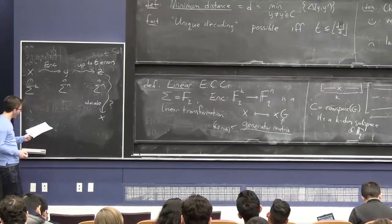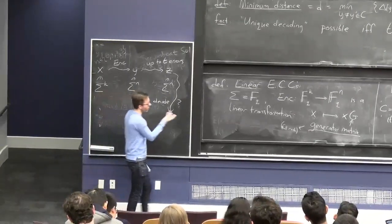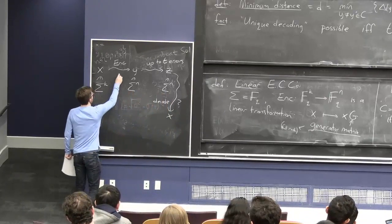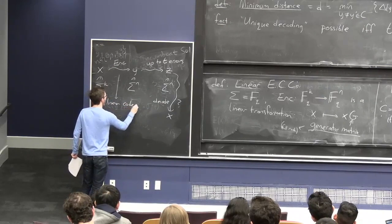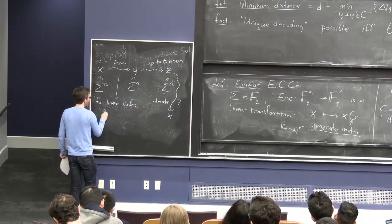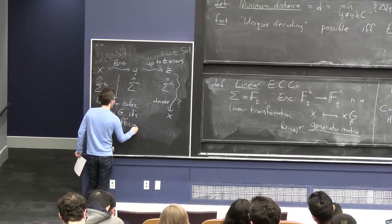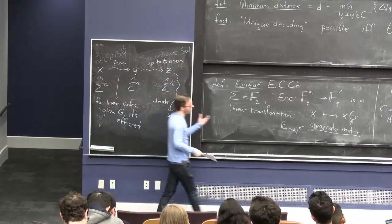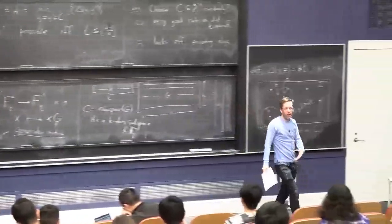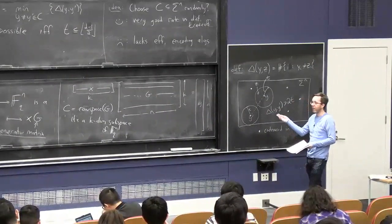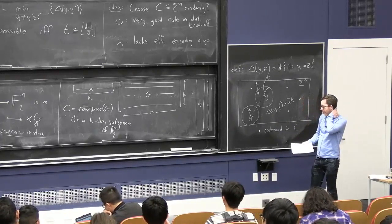One good thing about linear codes, defined by their generator matrix, is that encoding is always efficient. Anyone working with the code will have G, and the process of taking x and computing y is just a vector-matrix multiply.